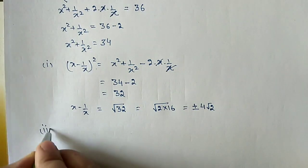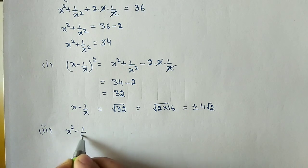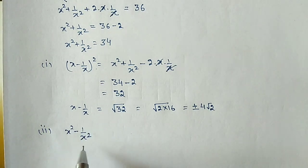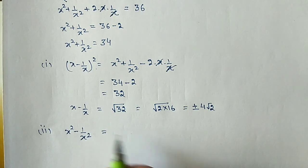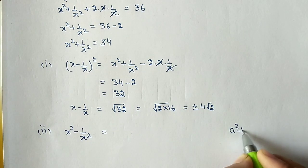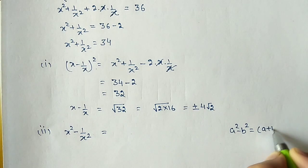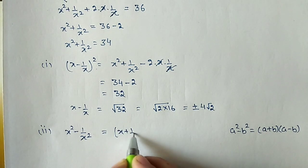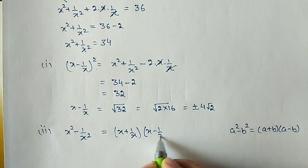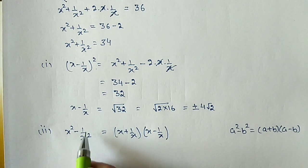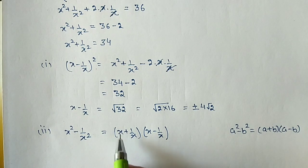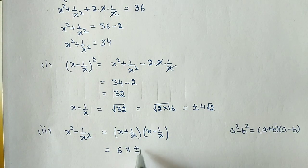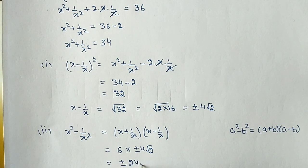For the second part we have to find x square minus 1 by x square. We don't have a direct formula, so we use a square minus b square equals a plus b into a minus b. Here a plus b is x plus 1 by x and a minus b is x minus 1 by x. The value of x plus 1 by x is given as 6 and x minus 1 by x we just calculated as plus minus 4 root 2. So the answer is plus minus 6 into 4, which is plus minus 24 root 2.